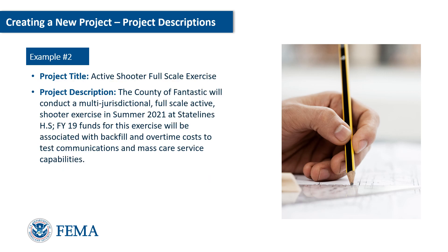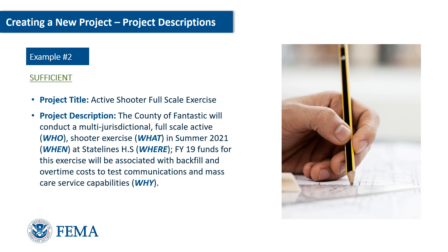Now let's look at another example. The project title is clear, concise, and descriptive. The project description answers the five questions: who, what, when, where, and why. Specific requirements for the project description can be found in each grant's Notice of Funding Opportunity.